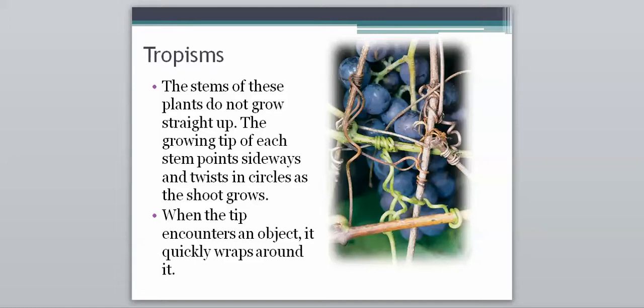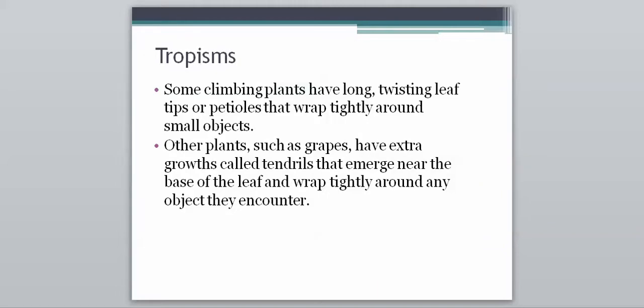So again, we might think of them as growing straight up. However, they kind of grow sideways. So once the tip touches something that it can grab onto, it wraps around, and then it will continue to kind of move its way up from there. And some climbing plants also have long, twisting leaf tips or petioles that will wrap tightly around small objects, kind of serving the same purpose.